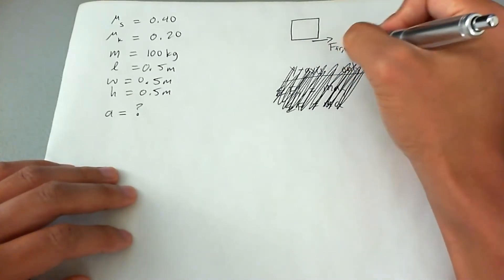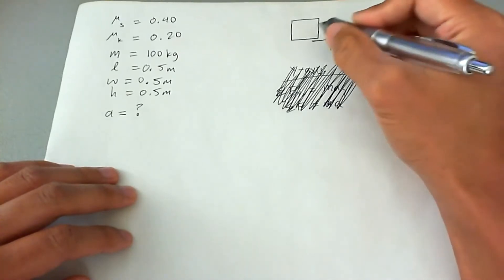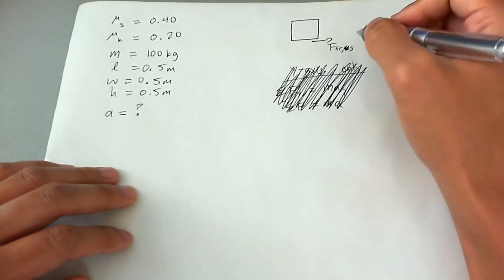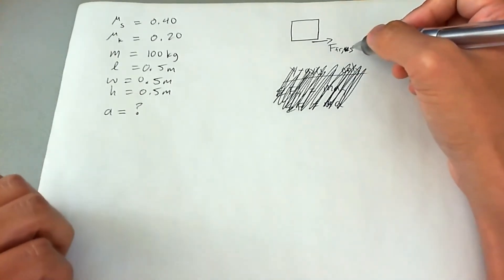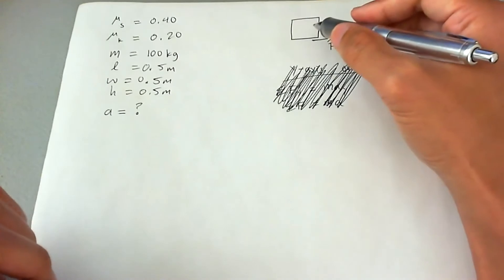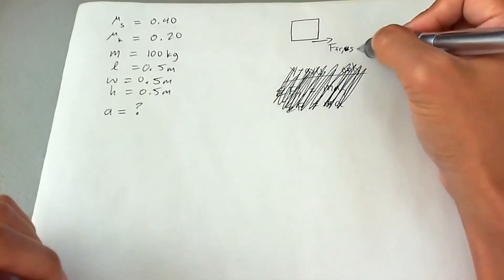When will this force of static friction not be enough in order to keep the box accelerating? In this case, we're only looking at static friction because the question specifically asks the maximum acceleration the box can handle without slipping. That means without having to rely on kinetic friction.